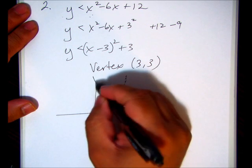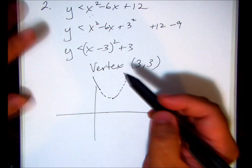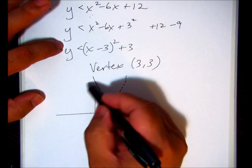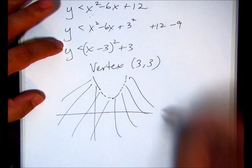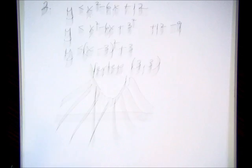So (3, 3) is about there and it's going to face up. Oh and it's dotted - I always forget about that. Pretend that it looks dotted to you. And this is less than, so you want below the parabola, so it's down here. That's it, that's number 2.